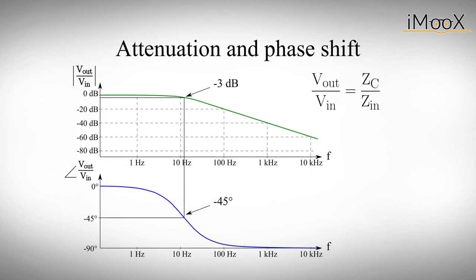Additionally, our filter not only attenuates the amplitude of the input signal slower than expected, but does also apply a phase shift to it. If we divide a phasor Zc by Zin, we can also obtain this second plot.